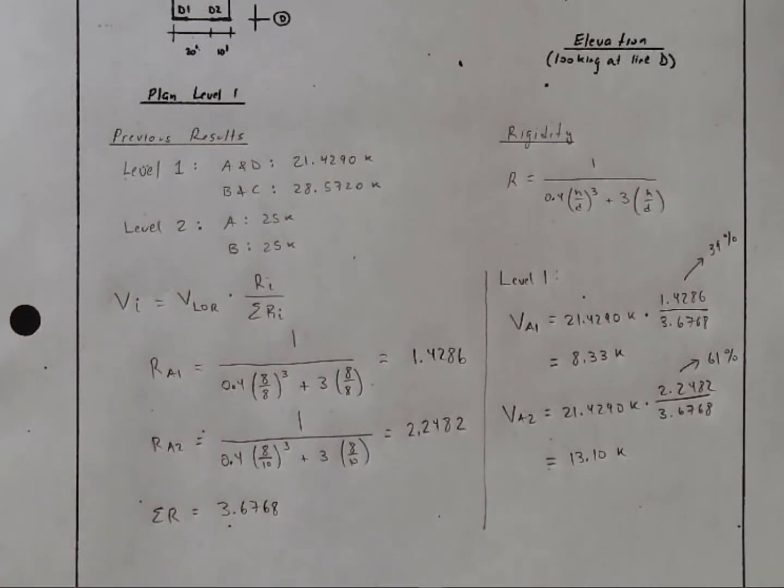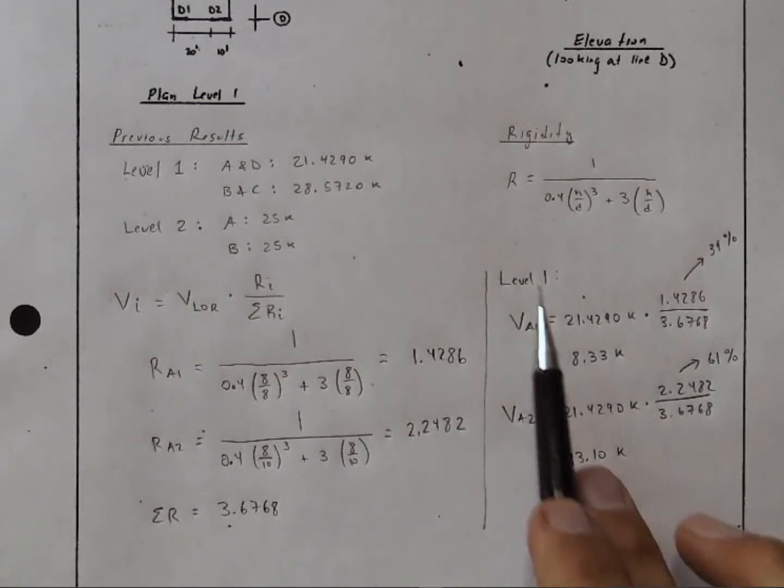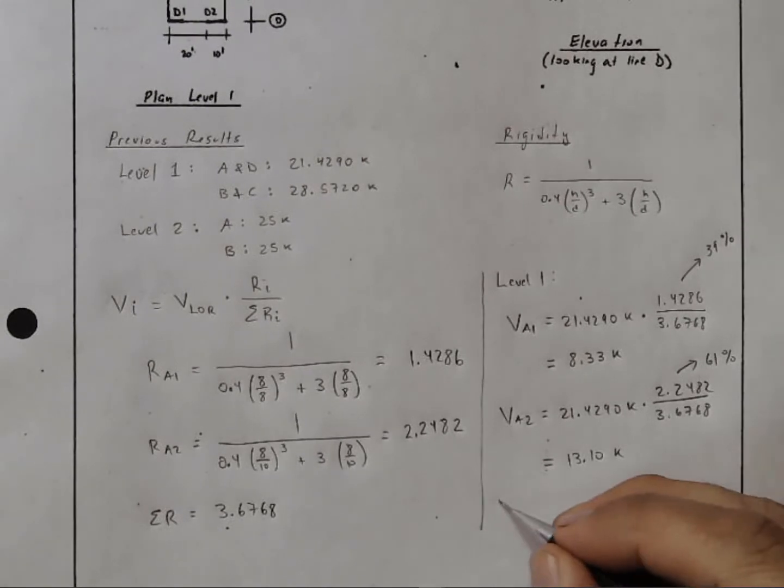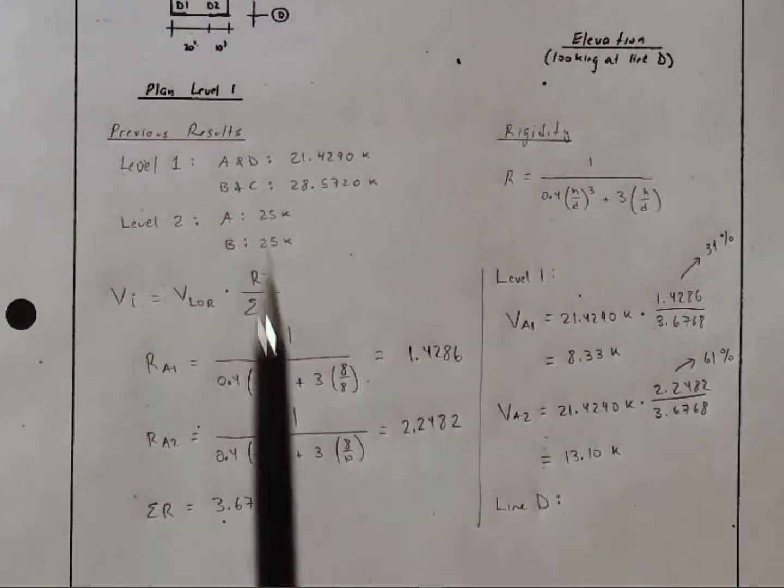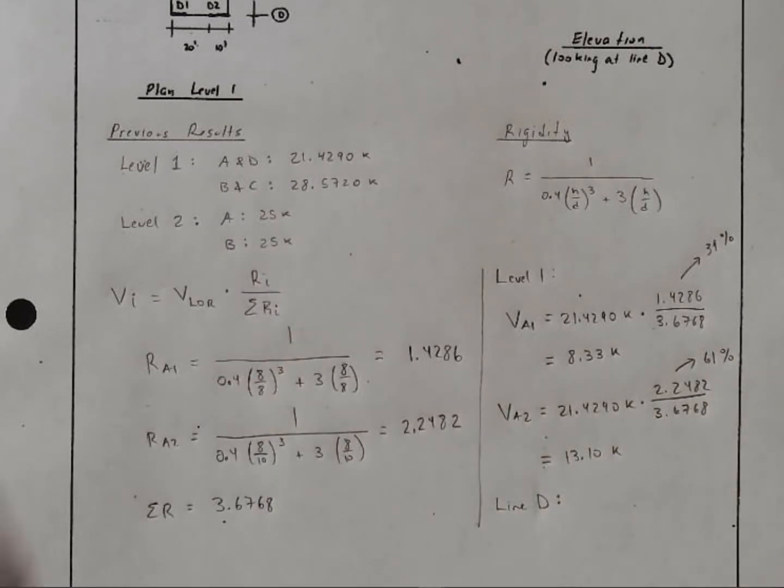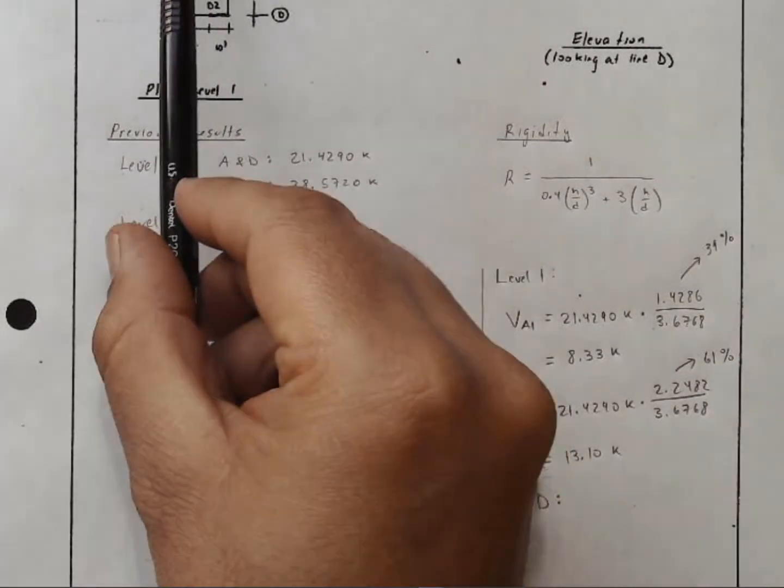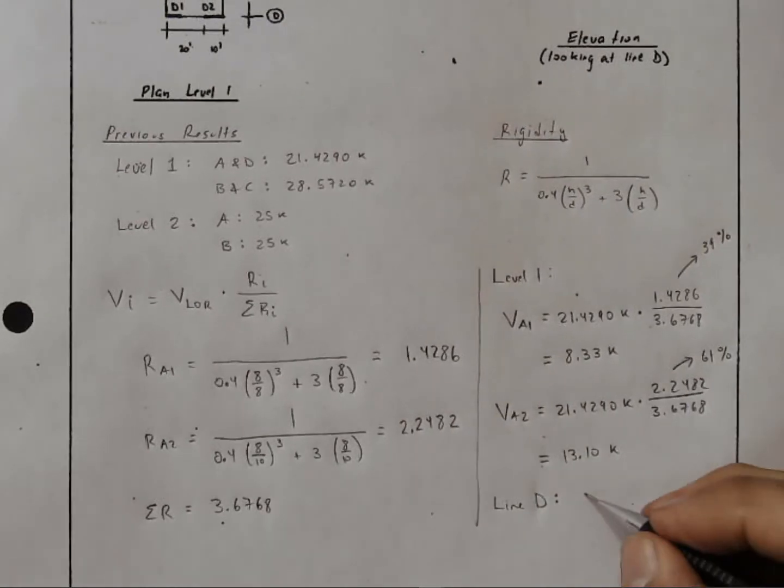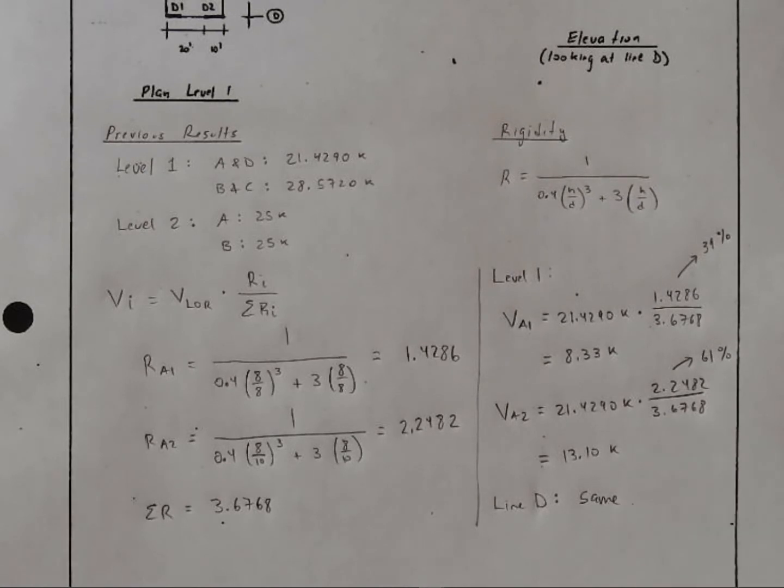So now we've taken care of level 1, line A. Line D, if we look at the fact that this force is for lines A and D, the dimensions of these walls are the same as the dimension of these walls. So the rigidities are the same. The calculation is the same. So nothing changes. These are simply the same.